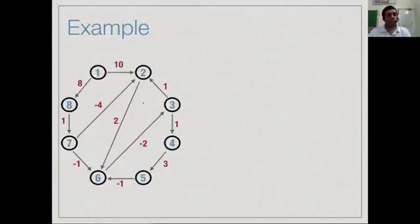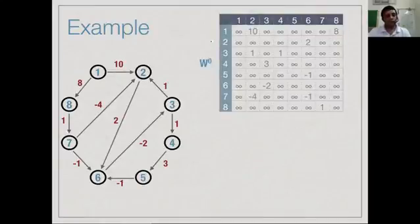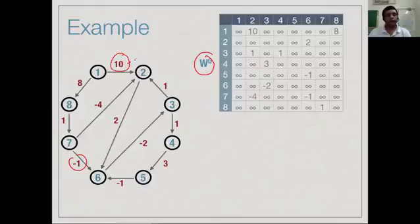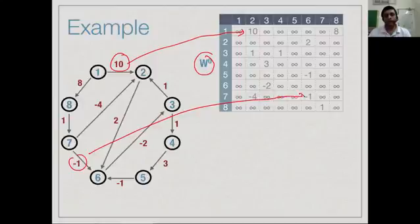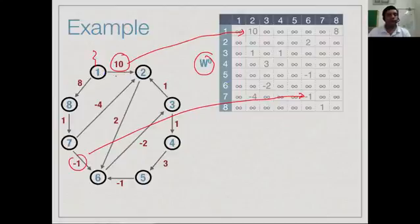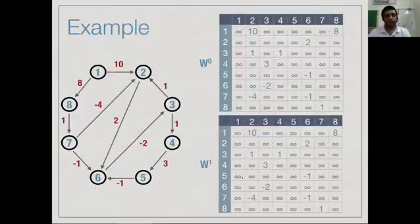Consider the same example used for Bellman-Ford. Initially we assign w_0 as the edge weights, giving an adjacency-matrix-like representation: for instance, edge 1→2 has weight 10, edge 7→6 has weight -1, and so on; all other entries are infinity. Going from w_0 to w_1 by allowing vertex 1 as an intermediate: since nothing points into vertex 1, the column for 1 is all infinity, so no other vertex can route through 1. Thus w_1 equals w_0 and nothing changes.